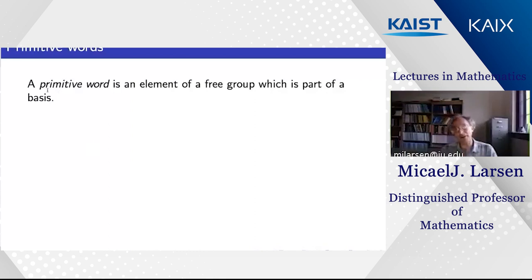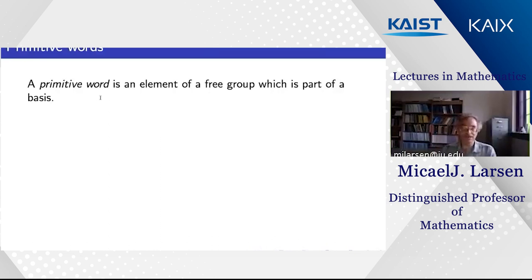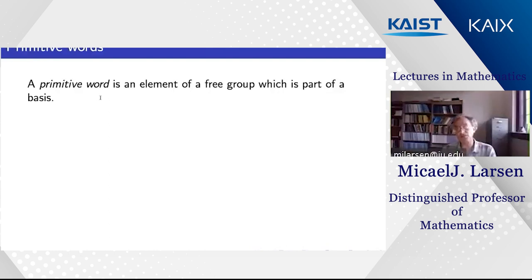A primitive word is an element of a free group that belongs to a basis. The free group on generators x and y consists of all words formed from x, y, x⁻¹, y⁻¹ with only the relation that a symbol next to its inverse cancels: for example, yxx⁻¹y = y². A basis of the free group on two generators is a pair of elements that generate the group; n elements generating a free group of rank n have no relations between them, analogous to a basis of ℤⁿ.